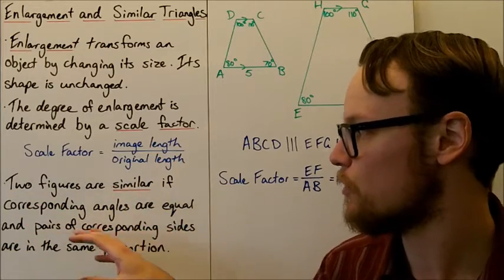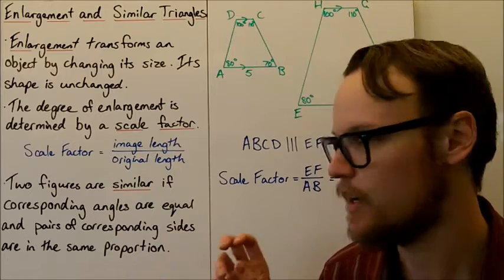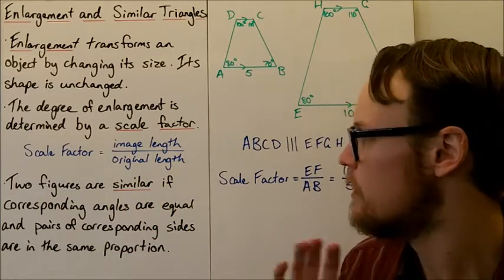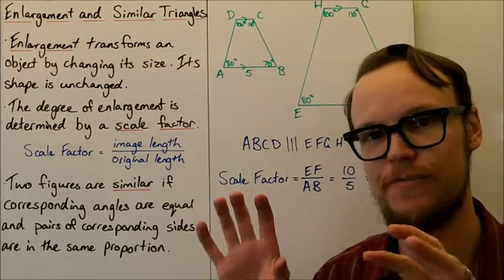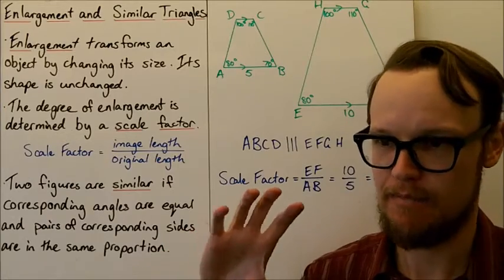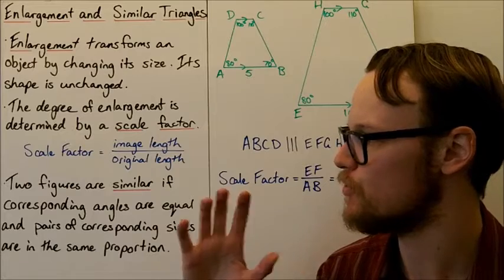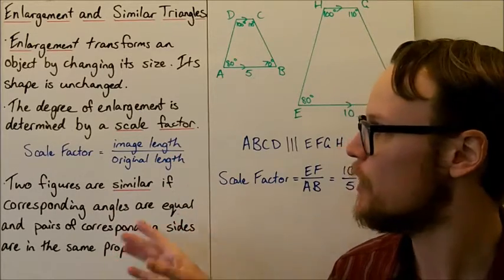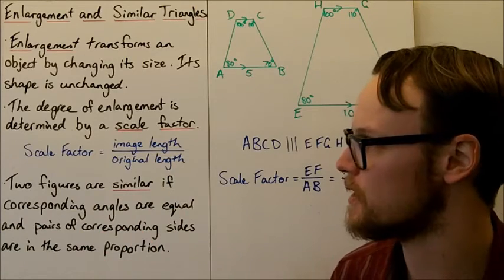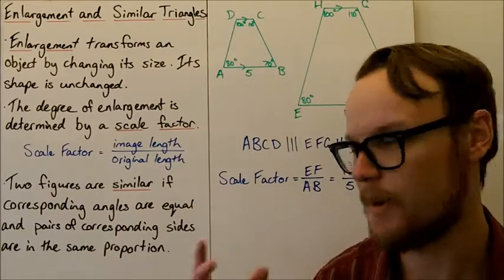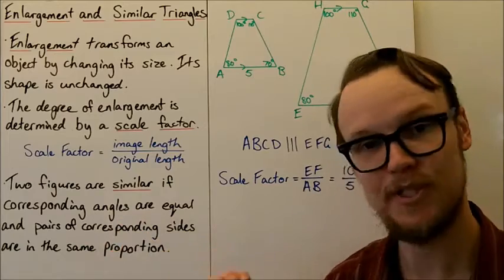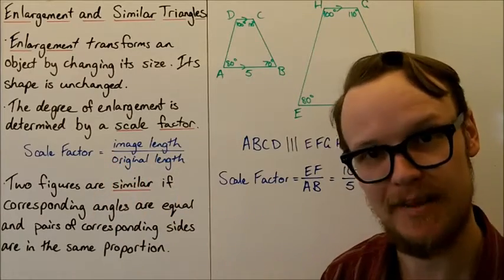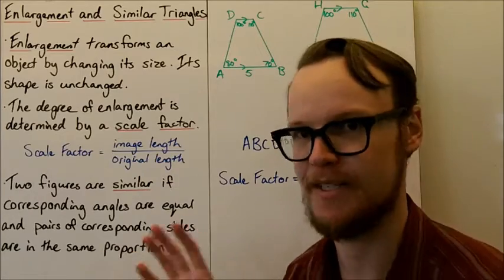Two figures are similar if corresponding angles are equal and pairs of corresponding sides are in the same proportion. Similarity shares some components with congruence — congruence means two figures are exactly the same but have been moved, rotated, or translated. With similar figures, they might also have been enlarged or made smaller, but their shape is still the same. If all angles are identical and corresponding sides are in the same proportion — following the same scale factor — those two figures are similar. That's the definition of similarity.